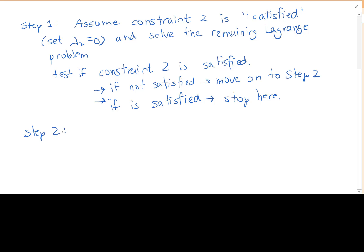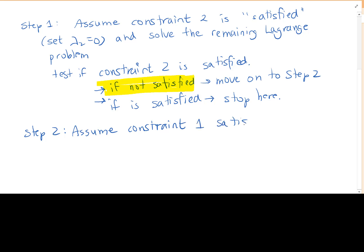We go on to step two only if the solution found in step one did not satisfy constraint two. If constraint two is not satisfied, we move to step two: assume constraint one is satisfied, i.e., set lambda one equal to zero and solve the leftover Lagrange problem.